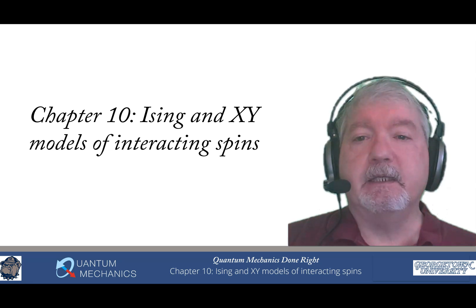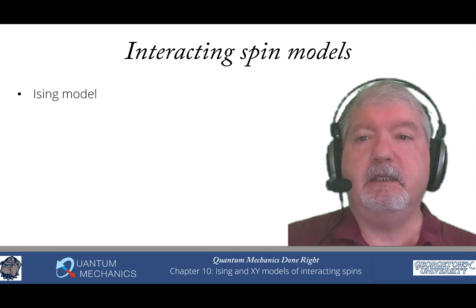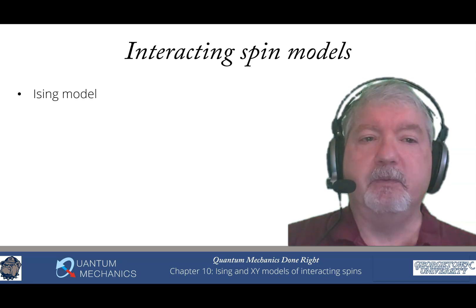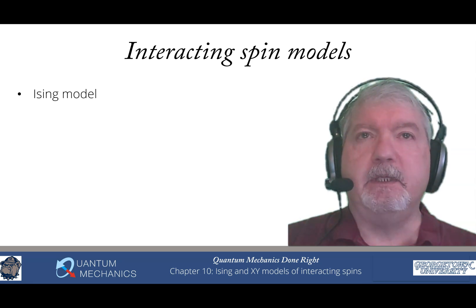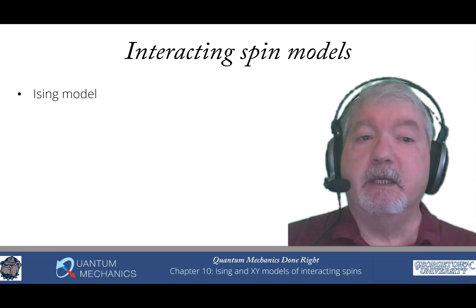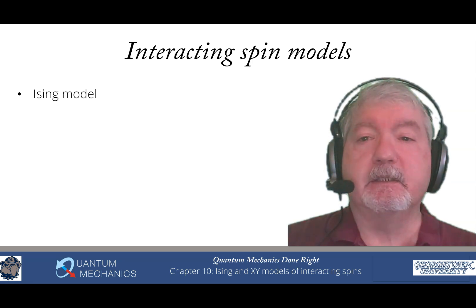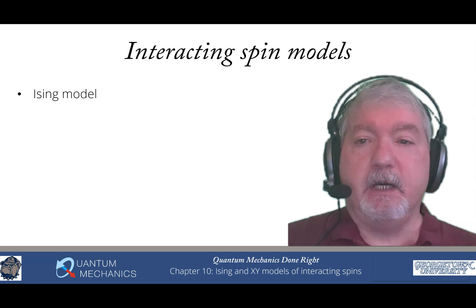So chapter 10, Ising and XY Models of Interacting Spins. This is a chapter that you often don't see in any quantum mechanics textbook, and I think it's a real shame because once you've developed all of this theory of angular momentum, it's really natural to start looking at interacting spin models.